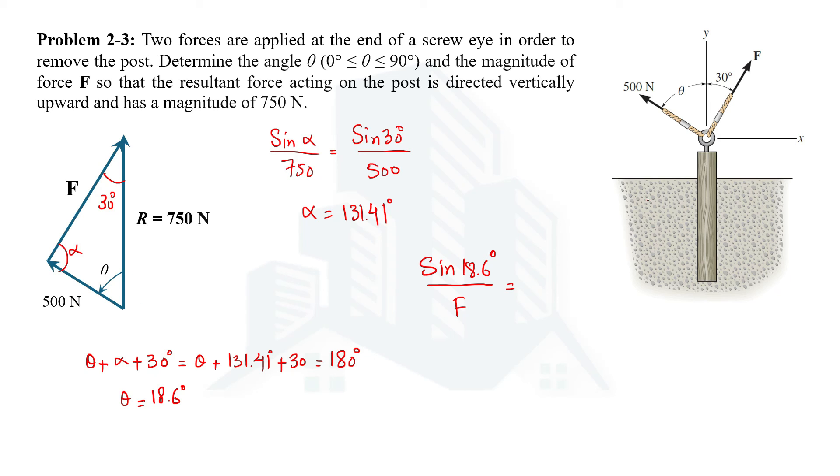Now we can use any other side, like we can use the resultant side or the 500 side, it's up to us. Let's use the 500 side where the opposite angle is 30. So sine 30 divided by 500. In this equation we can see only F is unknown, so we can determine the value of F by simply cross multiplying these values. On doing calculations we get 319 Newton force.